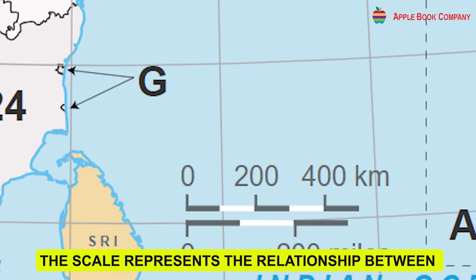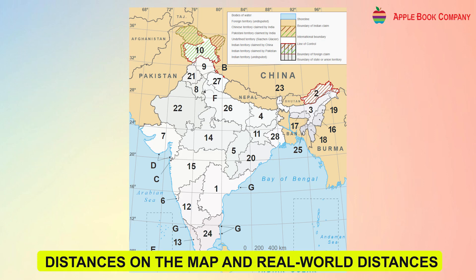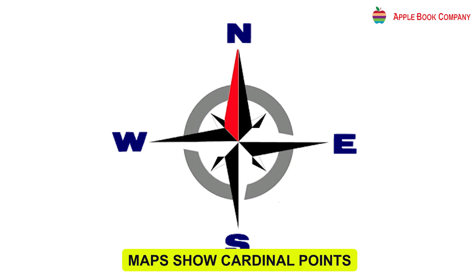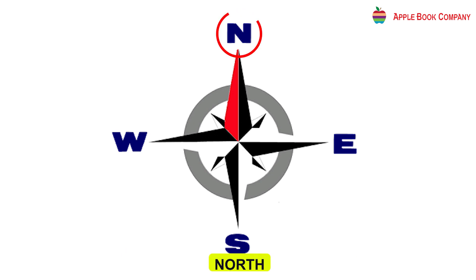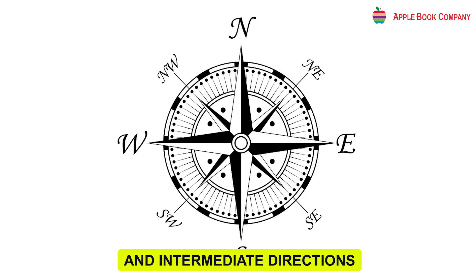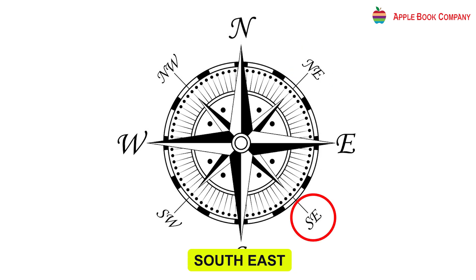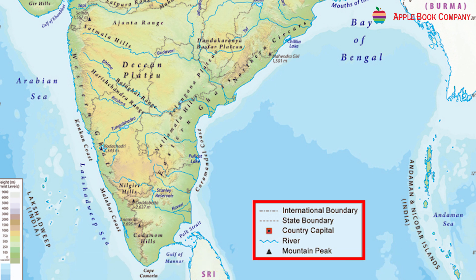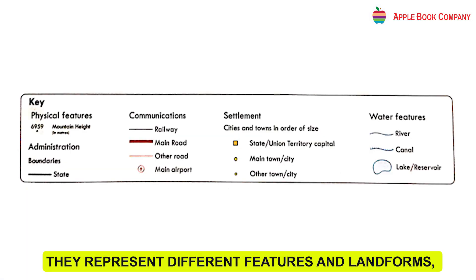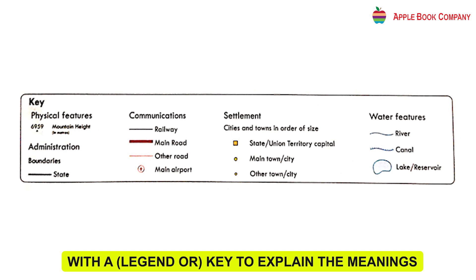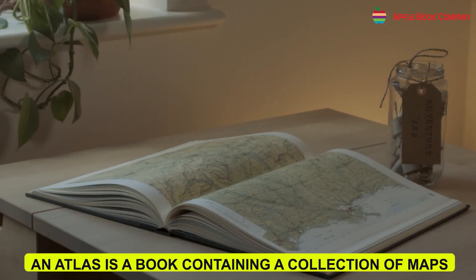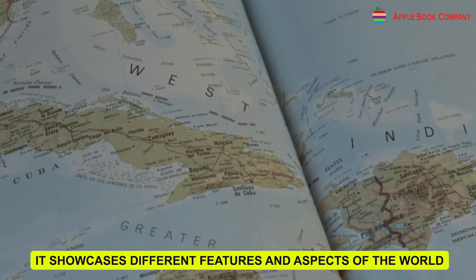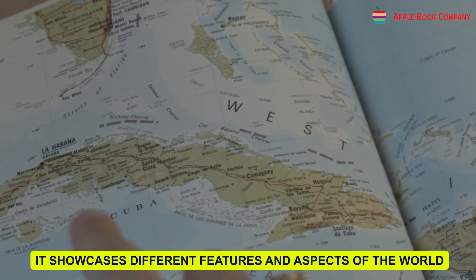The scale represents the relationship between distances on the map and real-world distances. Maps show cardinal points — North, South, East, West — and intermediate directions: Northeast, Southeast, Southwest, Northwest. Symbols and colors simplify the map, representing different features and landforms, with a legend or key to explain their meanings. An atlas is a book containing a collection of maps showcasing different features and aspects of the world.